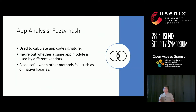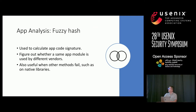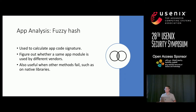The third piece of information is the fuzzy hash — a code signature calculated for the app code. Fuzzy hash is used to figure out whether a same app module is adopted by different vendors. This metric is also useful in other contexts; for example, when extracting device interfaces using symbolic execution on native libraries proves difficult, we use fuzzy hash analysis to analyze native libraries and determine whether two native libraries are similar.